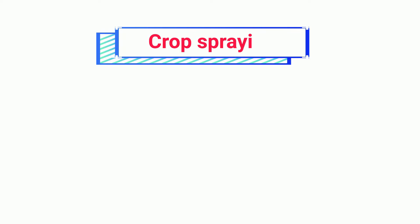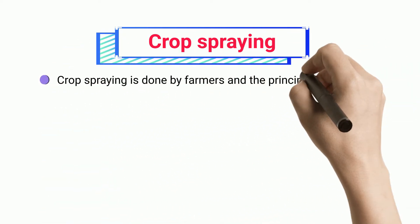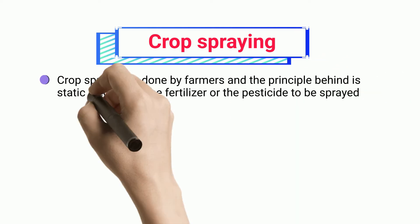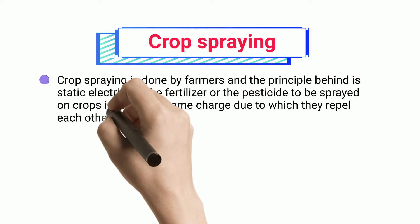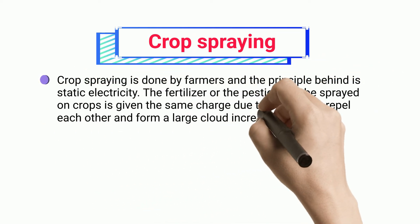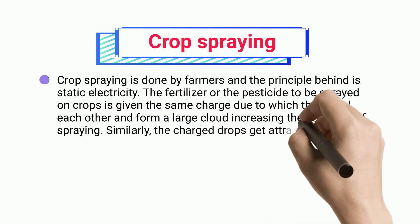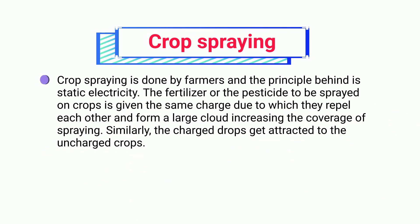Crop spraying is done by farmers and the principle behind it is static electricity. The fertilizer or pesticide to be sprayed on crops is given the same charge, due to which they repel each other and form a large cloud, increasing the coverage of spraying. Similarly, the charged drops get attracted to the uncharged crops.